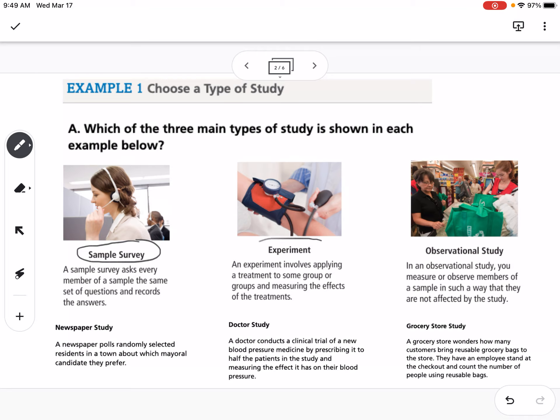Our second type is an experiment. An experiment involves applying a treatment to some group or groups and measuring the effects of the treatment. An example of that would be a doctor study. A doctor conducts a clinical trial of new blood pressure medicine by prescribing it to half the patients in the study and measuring the effect it has on their blood pressure.